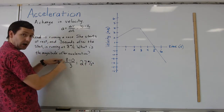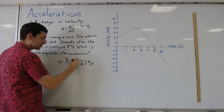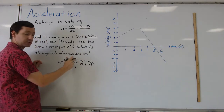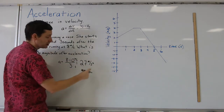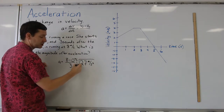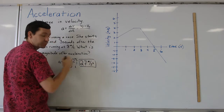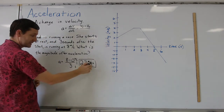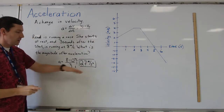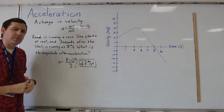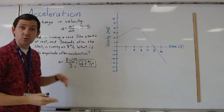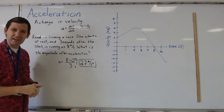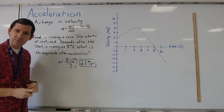Remember, the units on the top were in meters per second and the units on the bottom are in seconds. So we're taking meters per second and dividing by another seconds, which is why the units for acceleration are meters per second squared — there are two sets of seconds in the denominator. That's a pretty straightforward example of how we can use this formula and this definition of acceleration to calculate an average acceleration from some velocities.